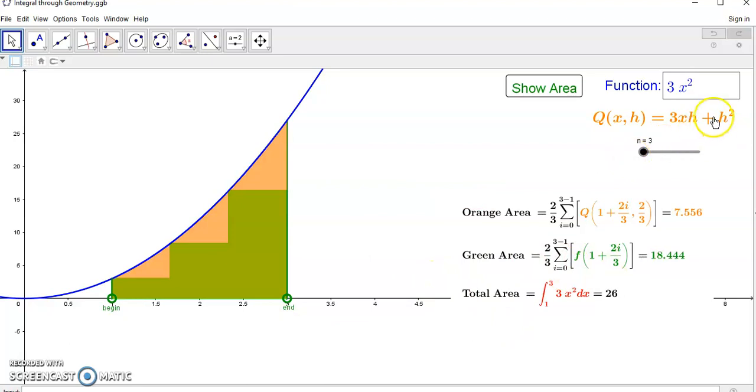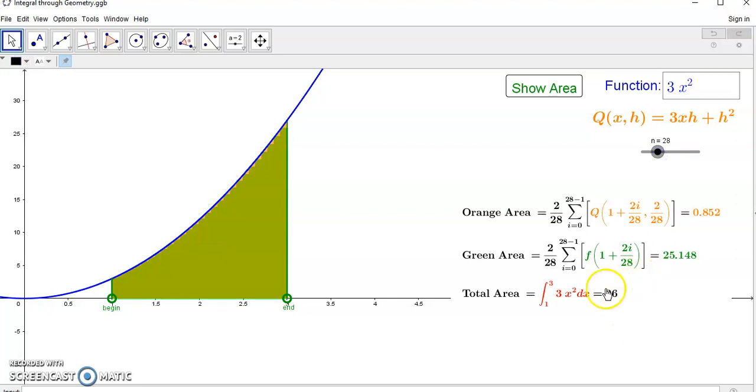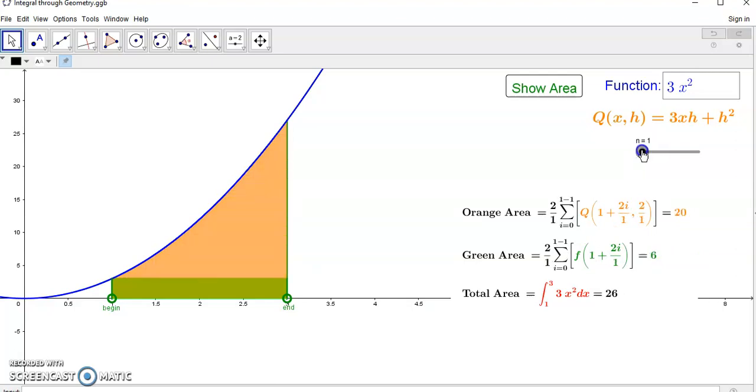So if you look at this applet, what's happening here is I've chosen a function which is 3x squared, and I've shown you how you can find it using the geometric identity. And it doesn't matter how many partitions you have, it won't change the value of the area which is calculated exactly without using limits or infinity or infinitesimals.